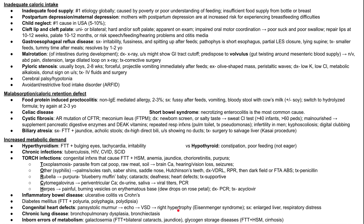Babies can also have chronic lung disease — bronchopulmonary dysplasia and bronchiectasis. Finally, there are rare inborn errors of metabolism such as galactosemia, where the baby might have bilateral cataracts and jaundice, and glycogen storage disorders, presenting with failure to thrive, hepatosplenomegaly, and cirrhosis.